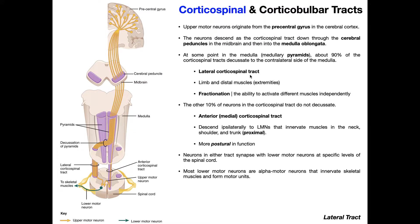Another important thing about the lateral corticospinal tract is that after decussation to the contralateral side, it controls a lower motor neuron on that side of the spinal cord. So those lower motor neurons are destined for skeletal muscle on the right side of the body, but those upper motor neurons originated from the left hemisphere of the brain. So when we're talking about the lateral corticospinal tract, we always think of contralateral control of skeletal muscles — upper motor neurons originate in the left hemisphere of the motor cortex, decussate to the contralateral side, and control lower motor neurons on that side. So this tract controls contralateral musculature.